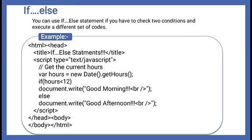So far we worked with one condition. If we need to work with two conditions, we use `if-else`. For example, there is a `date` object that returns the current date — it contains month, year, day, hours, seconds, and minutes. We extracted `getHours()` and stored it in `hours`. We check: if `hours < 12`, print 'Good morning'; otherwise print 'Good afternoon'. Just like we used `if-else` in C.